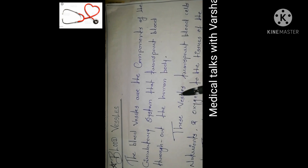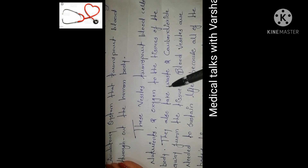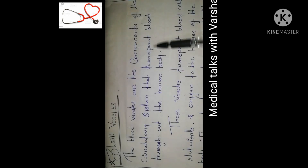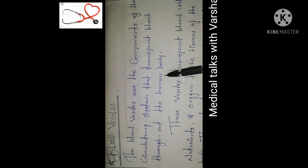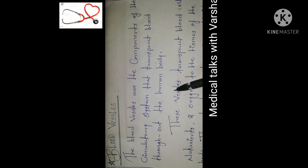Blood vessels form a type of network that is spread throughout the whole body. They are a component of the circulatory system. The circulatory system has two main components: the heart and the blood vessels. The basic function of blood vessels is transportation — transporting blood throughout the human body.